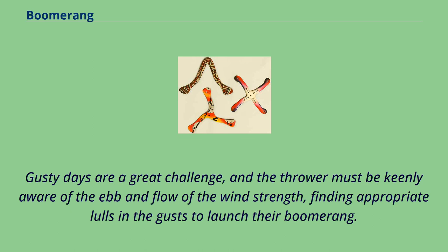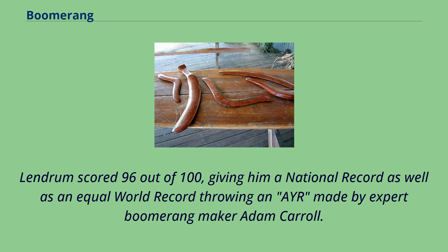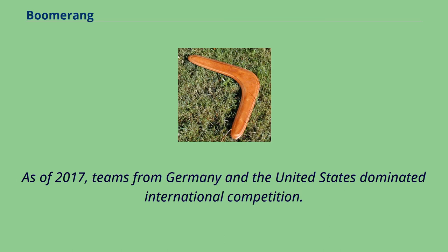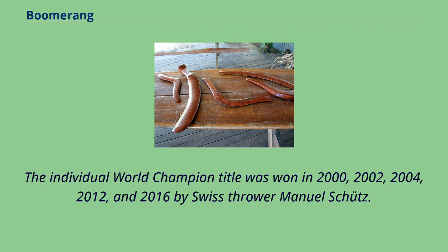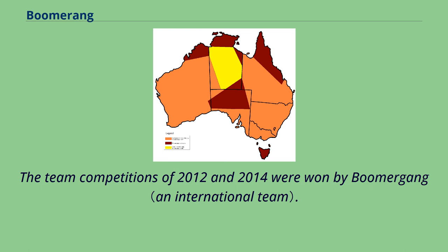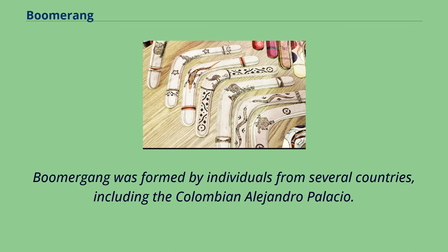A world record was achieved on June 3, 2007 by Tim Lendrum in Aussie round, scoring 96 out of 100 — a national record and equal world record — throwing a boomerang made by expert maker Adam Carroll. In international competition, a World Cup is held every second year. As of 2017, teams from Germany and the United States dominated. The individual world champion title was won in 2000, 2002, 2004, 2012, and 2016 by Swiss thrower Manuel Schutz, and in 1992, 1998, 2006, and 2008 by Fridolin Frost from Germany. Team competitions in 2012 and 2014 were won by the multinational team Boomerang (Germany 2012, Japan 2014 for the first time), including Colombian Alejandro Palacio. In 2016, USA became team world champion.